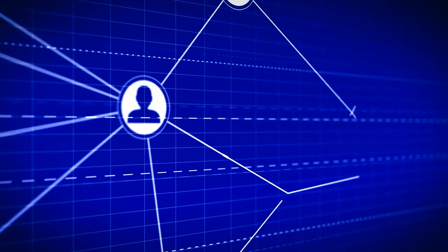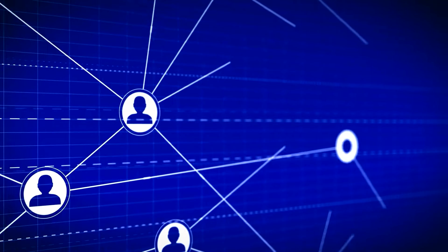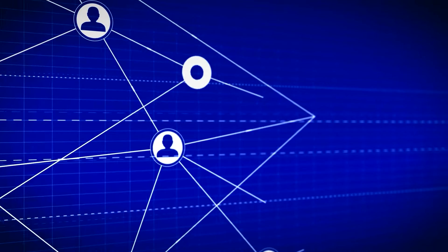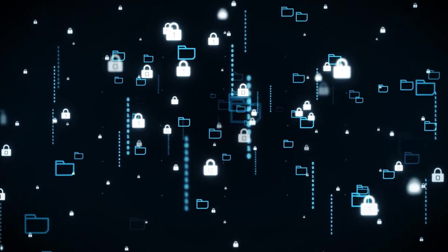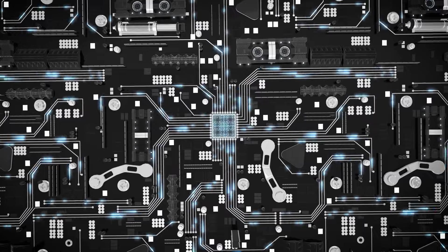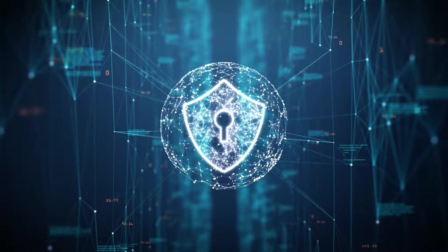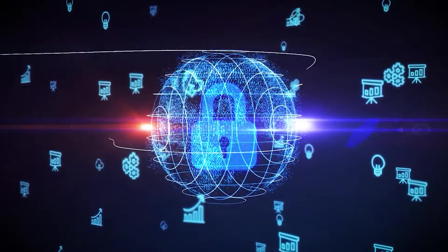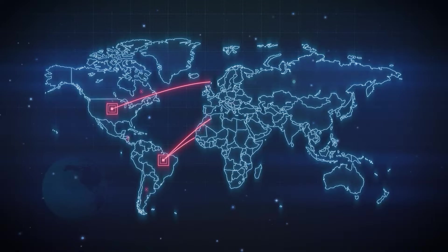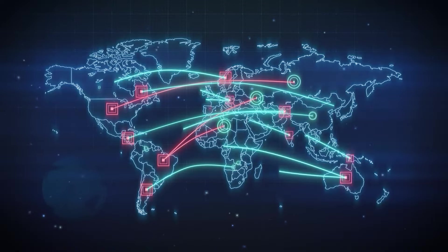But why is this important? The blockchain space is very diverse but fragmented. There are hundreds of blockchains out there, each with its own features, advantages, and limitations. Some blockchains are faster, some are more secure, some are more scalable, some are more decentralized, and so on. However, most of these blockchains are isolated and cannot communicate or exchange data with each other. This creates a lot of friction and inefficiency for users and developers who want to access the full potential of the decentralized Web.